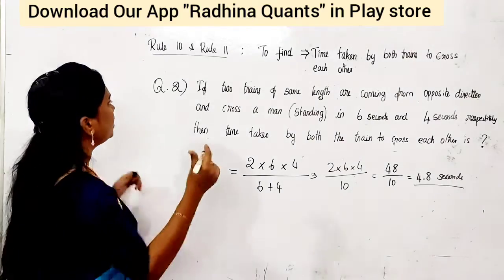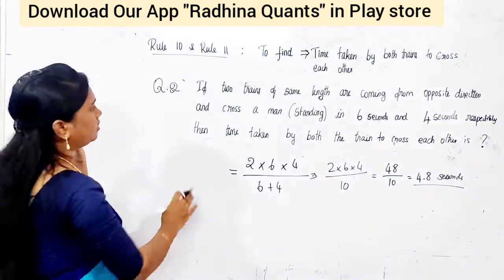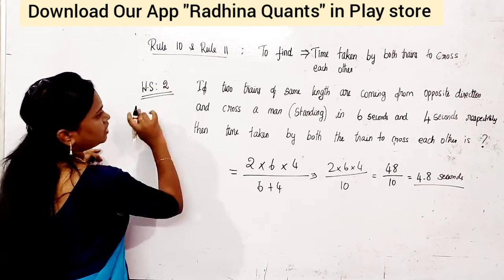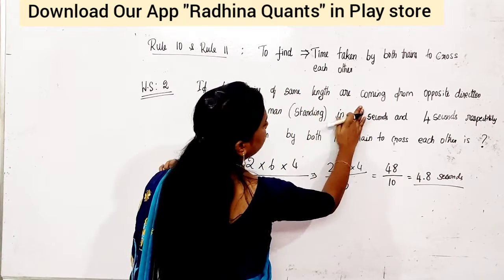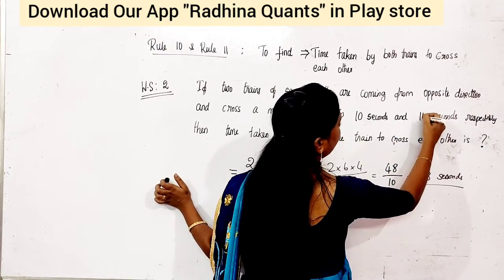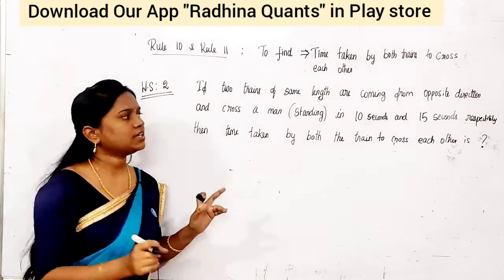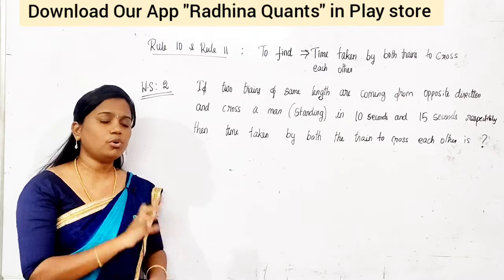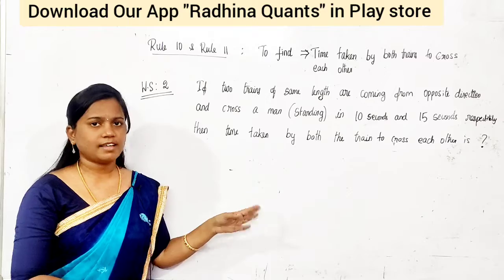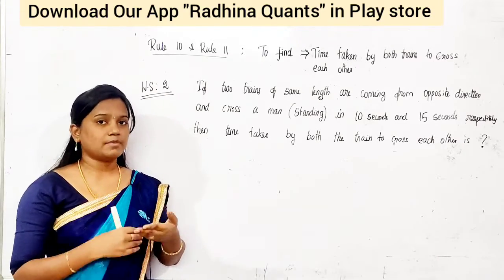Workout sum 2: Two trains of the same length moving in the opposite direction cross a standing man in 10 seconds and 15 seconds respectively. Find the time taken to cross each other. Post your answer in the comments. It's definitely easy — if you solve it, you'll be interested to do more.